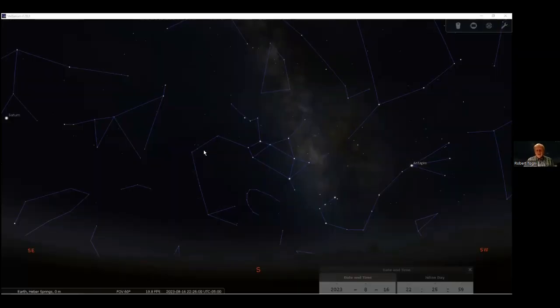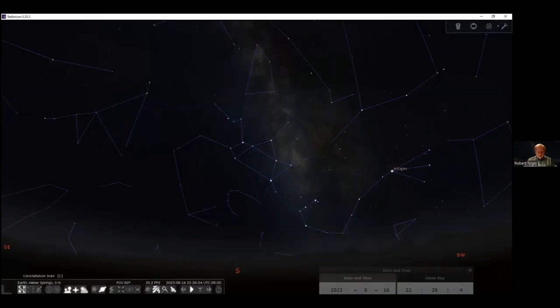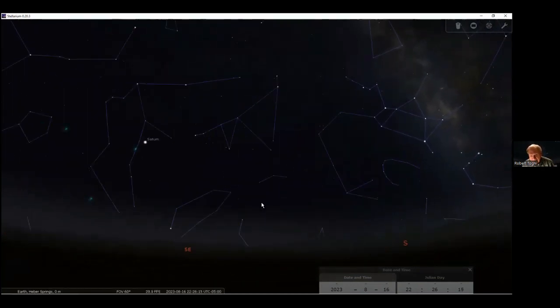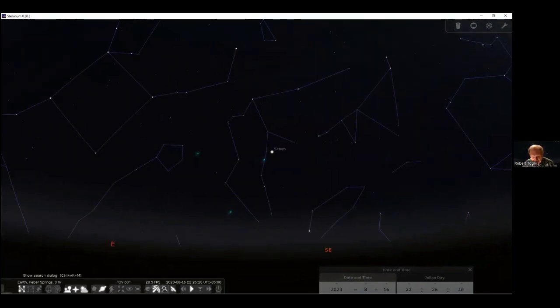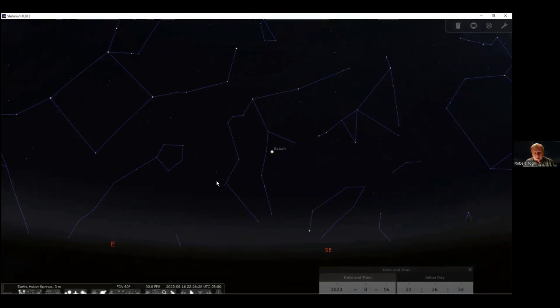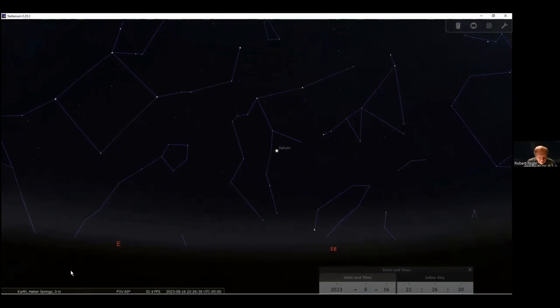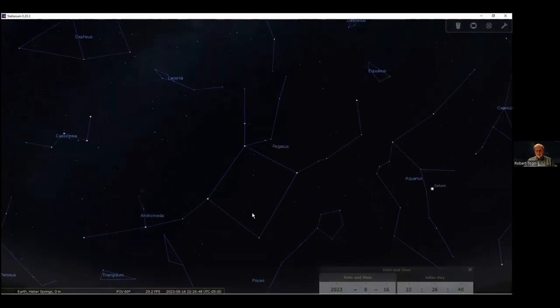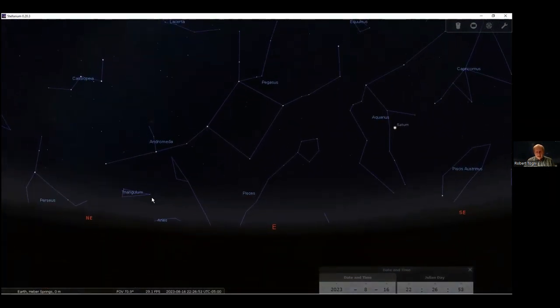This is the sky right now, and I've got the constellations turned on. Stellarium's a very nice program to learn the sky with, or after you learn it, to go out and just check things out, see different things about, see where things are in the sky. Right now, Saturn is in Aquarius, so it's the only bright object in that area of the sky. Jupiter's not up yet. This is toward the east.